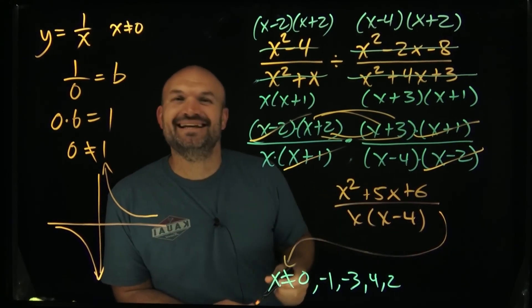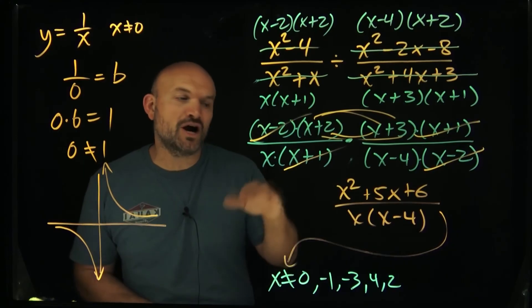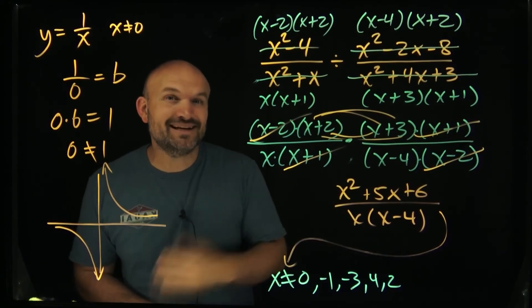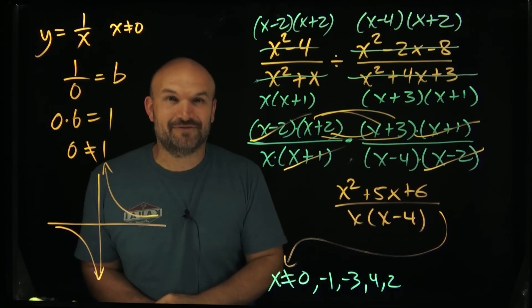Where x cannot equal 0, negative 1, negative 3, 4, and 2. Hopefully that helped clarify excluded values. If you want another example of rational expressions then check out the next video I have for you here.